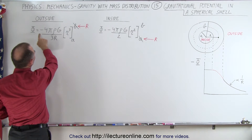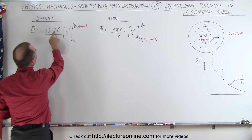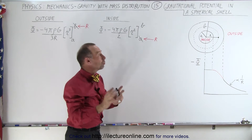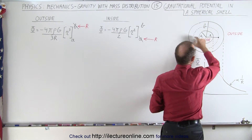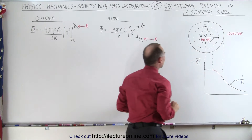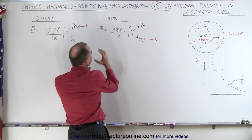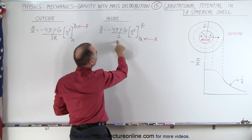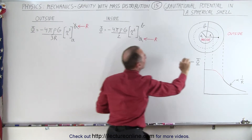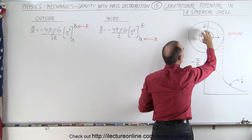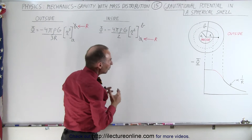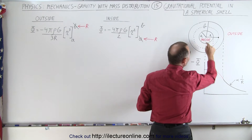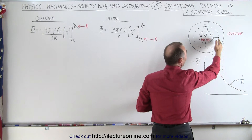The gravitational potential outside was equal to minus 4 pi rho g divided by 3r, times r cubed, integrated from A to B. For the gravitational potential inside the cavity, we integrated the same way and ended up with minus 4 pi rho g over 2 times r squared, again evaluated from A to B, to account for the effect of all of the material. When we graphically represent those two, we end up with a constant value inside the sphere and a value that depends on 1 over the distance when we're outside the sphere.